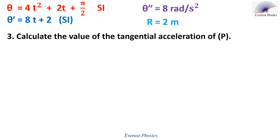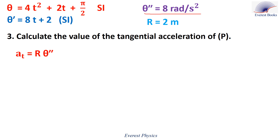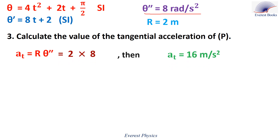Number three: calculate the value of the tangential acceleration of P. The tangential acceleration is given by: aₜ = r × theta double prime. With theta double prime = 8 radians per second squared and r = 2 meters, so aₜ equals 2 times 8, which equals 16 meters per second squared.